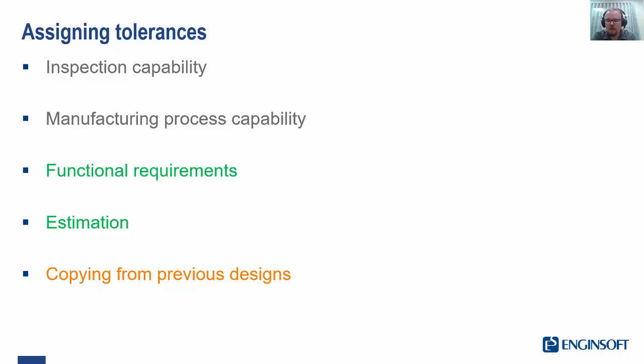Manufacturing process capability. Again, our requirements should be what we need from our assembly, but we are often limited by manufacturing processes and need to take that capability into account.